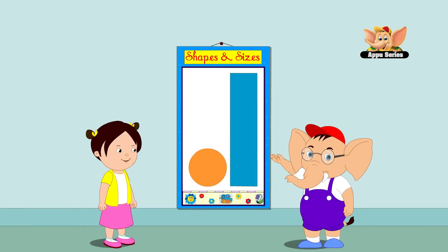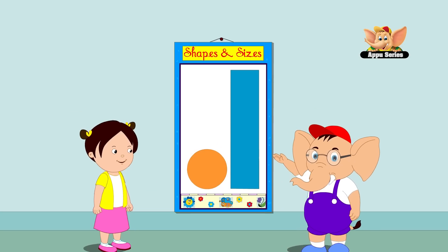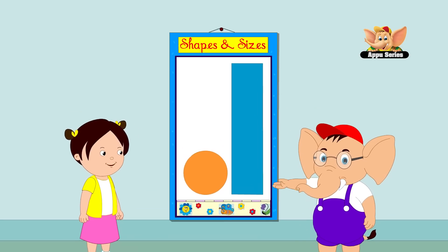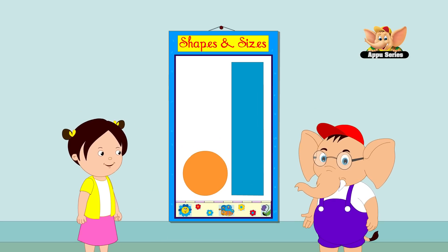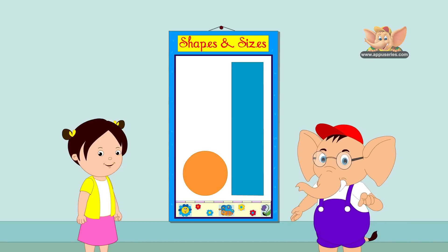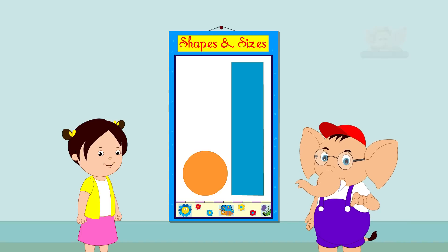Now, a number of objects will appear one at a time. We will have to see if it belongs to the long category or the round category. Are you ready? Alright, let's begin.